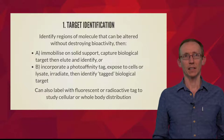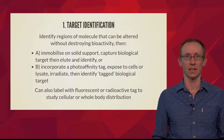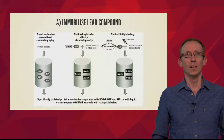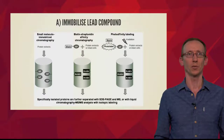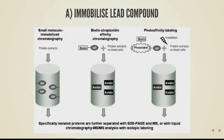We can also label the compound with fluorescent and radioactive tags to study cellular and whole body distribution, which is very often done in the drug discovery process. The first method is to immobilise the lead compound onto a solid support. We take the small molecule, immobilise it onto the solid substrate, then flush protein extracts or cell lysate through this column. Any target that binds to the natural product should be retained and not flushed away. We can then release the biological target by denaturing it or competing with free natural product.